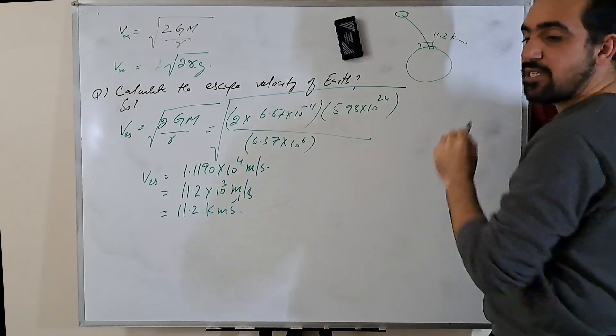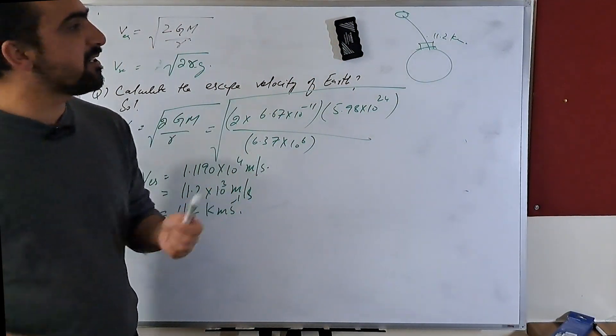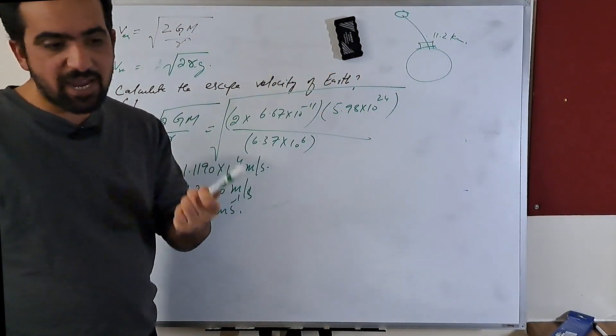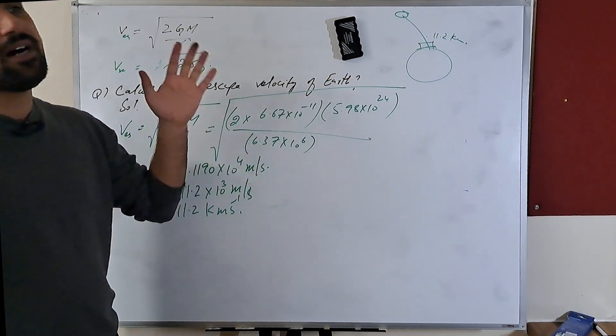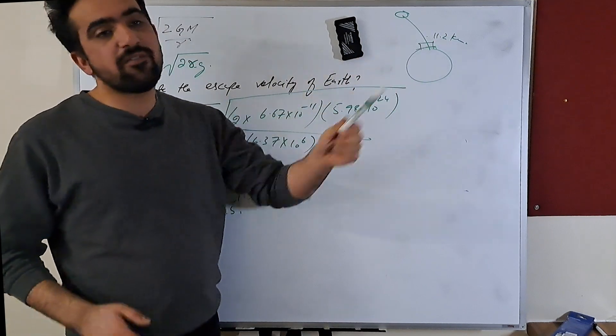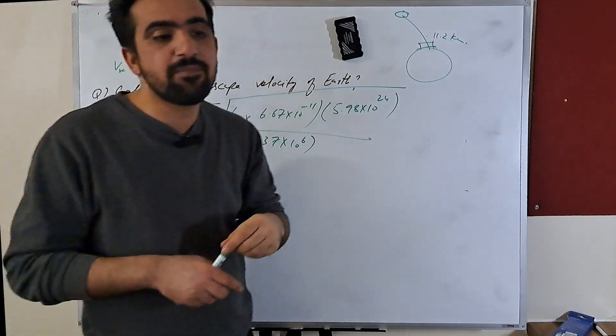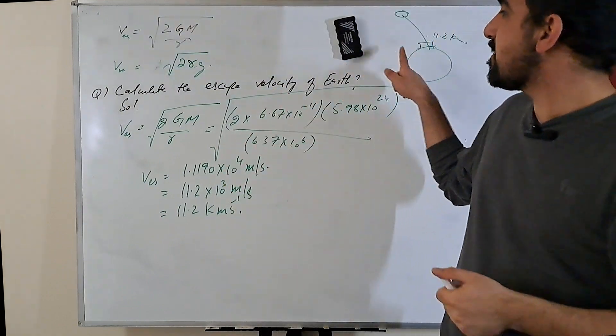11.2 kilometer per second. No matter you give the 11.2 kilometer per second speed to this pen, or a truck, or a big house, or a rocket, or a ship, if it is given 11.2 kilometer per second initial speed, it will escape. So it's independent of the mass of the object.